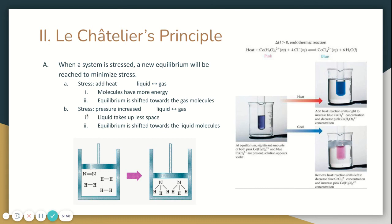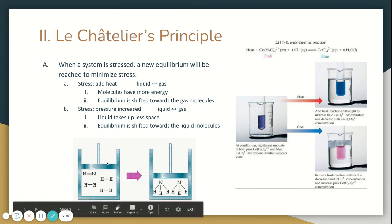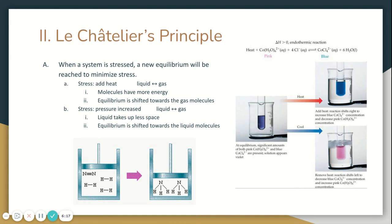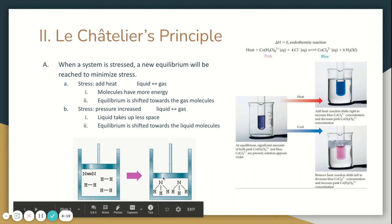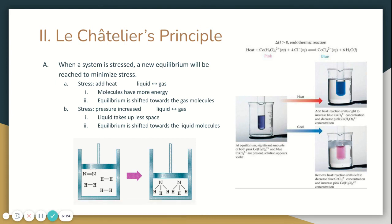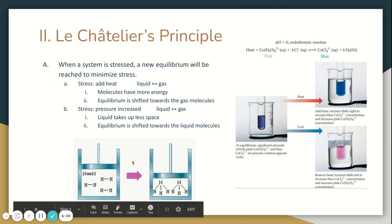Another way to stress a system is to increase pressure. Sometimes we do that by making something smaller. In this picture down below, we have a larger container, and then we increased the pressure by making the volume smaller. Pressure and volume have an inverse relationship. When one goes up, the other goes down. When pressure is going up, the volume got smaller. Depending on the molecules, that can shift it one direction or another.